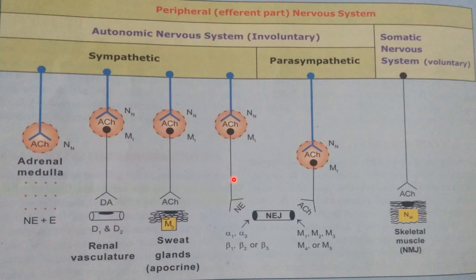Whether it is parasympathetic or sympathetic nervous system, the pre-ganglionic neurotransmitter must always be acetylcholine. At the autonomic ganglia, the Nn receptor is mainly present and functions regardless of whether the system is sympathetic or parasympathetic. The M1 receptor is also present but in a very minor quantity.